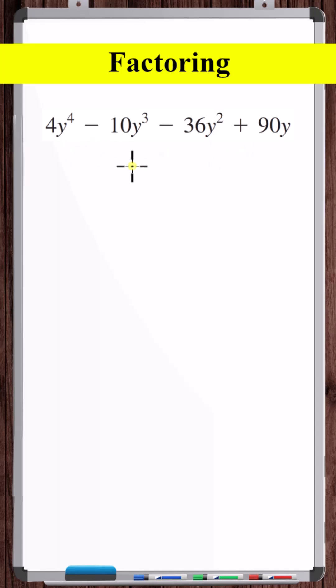Let's factor this polynomial. So with factoring, the first thing you want to look for is if there's a greatest common factor to take out. Here we can see that we can take out a 2y.